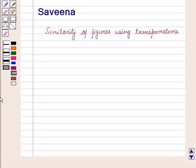Hello and welcome to the session. In this session, we shall discuss if one figure is obtained from the other figure using translation, reflection, rotation, and dilation, then the obtained figure is similar to the given figure.